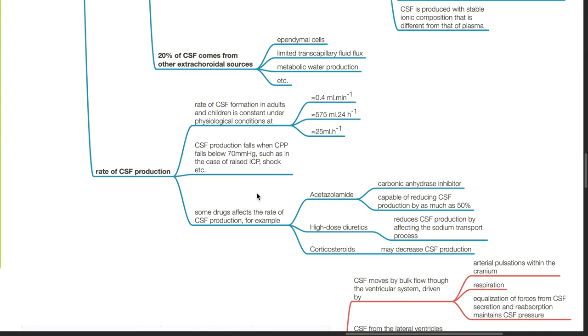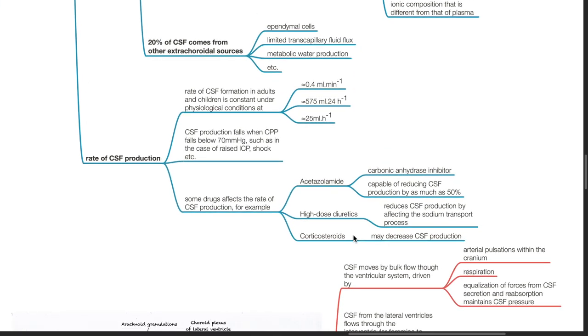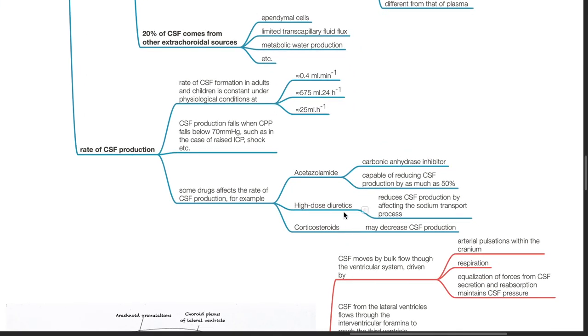Some drugs affect the rate of CSF production. For example, acetazolamide, a carbonic anhydrase inhibitor, is capable of reducing CSF production by as much as 50%. High-dose diuretics, such as furosemide, reduces CSF production by affecting the sodium transport process.